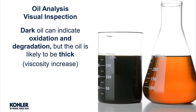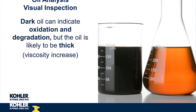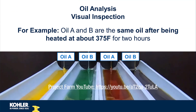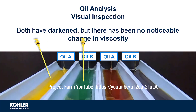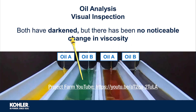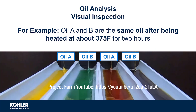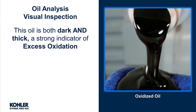Dark oil can indicate oxidation and degradation, but the oil is likely to be thick. For example, oil A and B are the same oil after being heated at 375 degrees for 2 hours. Oil A was bright yellow and darkened to a more normal amber color, while oil B was green and now is dark like coffee. 375 degrees is more than hot enough to cause oxidation, but as this experiment illustrated, it would take more than 2 hours for viscosity-changing oxidation to occur. The oil pictured here is both dark and thick, a strong indicator of excess oxidation.